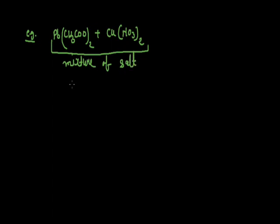So whenever we are having two or more than two salts that is called a mixture of salt. Now this mixture of salt contains how many anions.